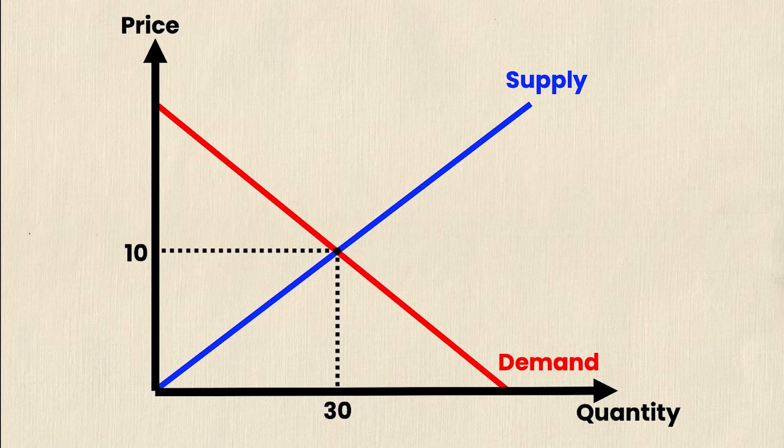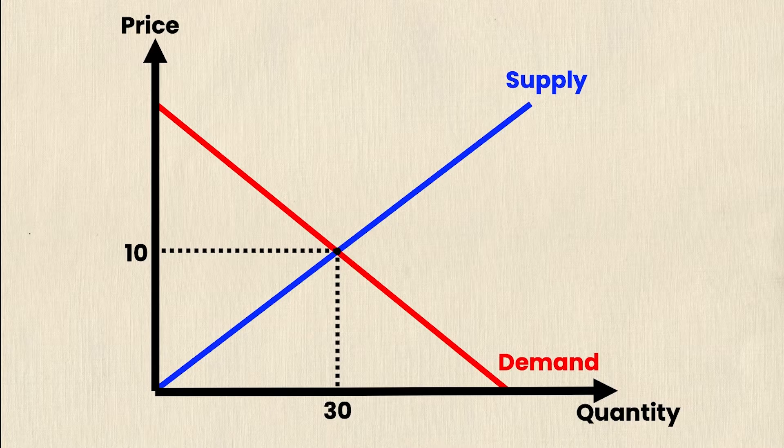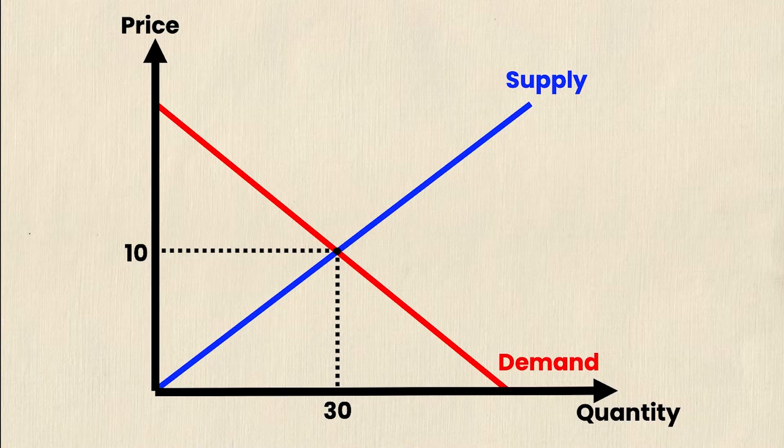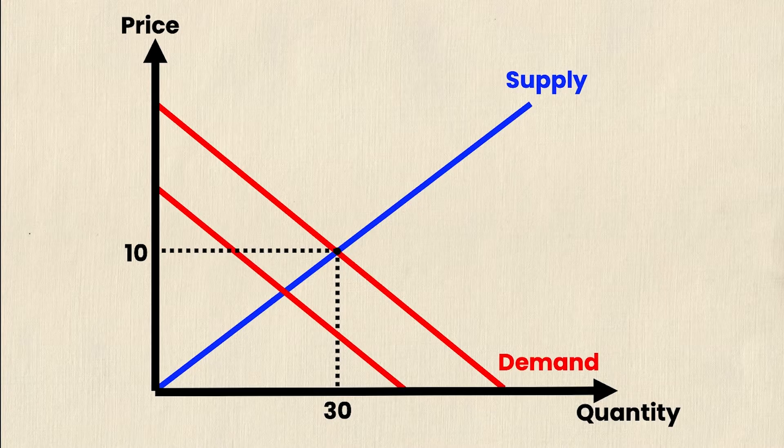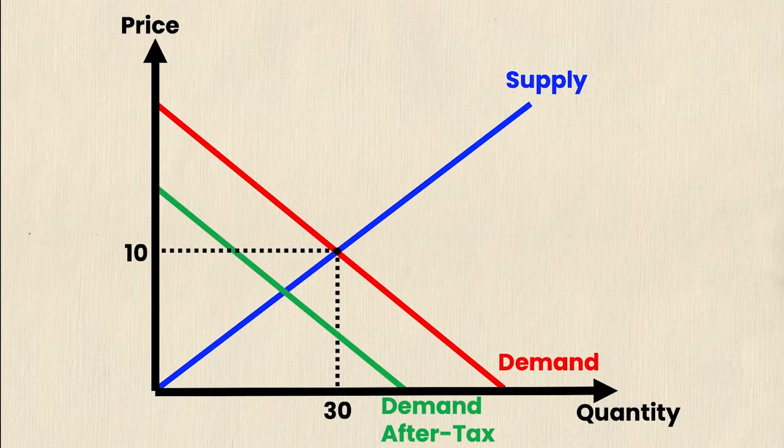So now I can put those onto my graph. Now this video is looking at a per unit tax on consumers. Now this exact magnitude of the tax will end up being $5, but we're going to go over that later in the video. What we do know is that a per unit tax on consumers will negatively impact their real income. And if real income goes down, then the demand curve will shift. So now we have two demand curves. I'm going to make one of them green and denote it as demand after tax so that we can tell them apart.